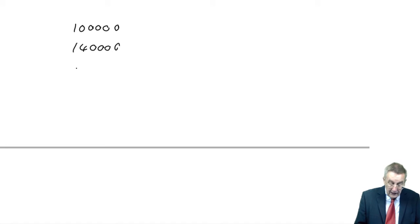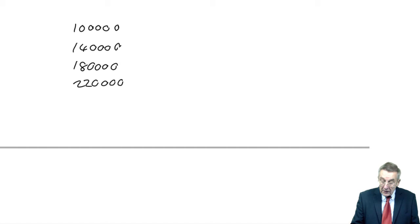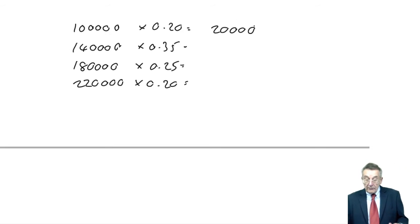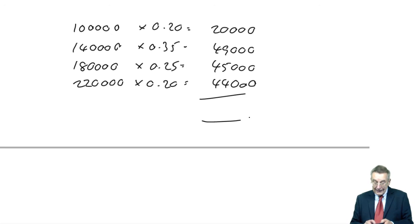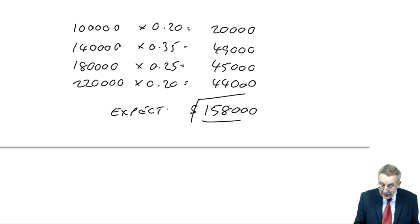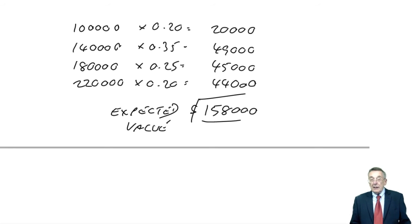So 100, 140, 180, 220. To get the average or the expected, you multiply by the probabilities. 100 times 0.2, 140 times 0.35, 180 times 0.25, 220 times 0.2. So multiply by the probabilities and the amount, the total comes to 158,000. Well, there is the expected or average value.